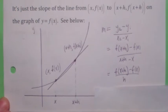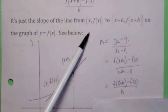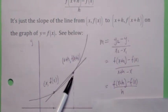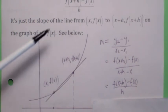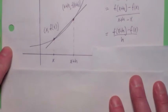So what is the difference quotient again? The difference quotient is just the slope of the line from the point (x, f(x)) to the point (x+h, f(x+h)) on the graph of y equals f(x). It's the slope of this line. Okay, so let's look at some more examples.